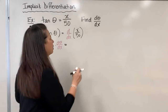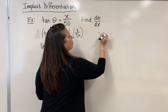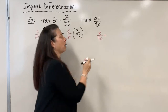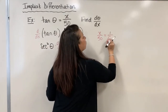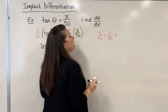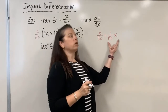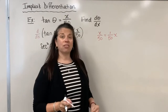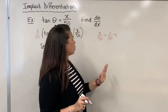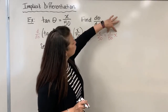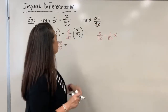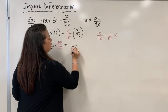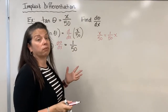One little note: x over 50 can be thought about as simply one over 50 times x. If you imagine x over 50 as (1/50)x, then finding the derivative of that piece is not so bad. All we need to do is say the derivative of (1/50)x is essentially just 1/50, per our derivative rules.